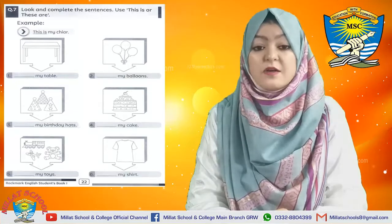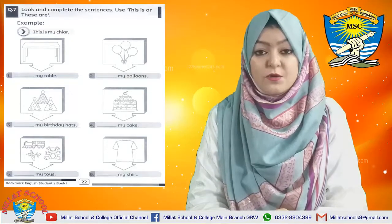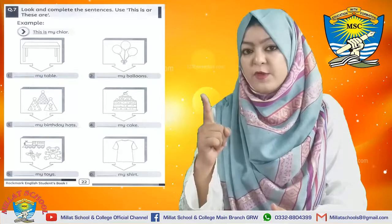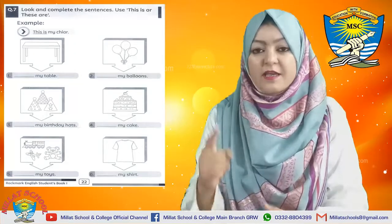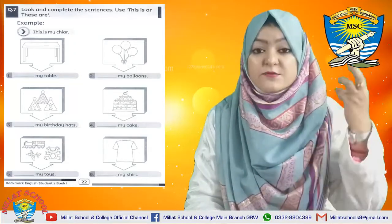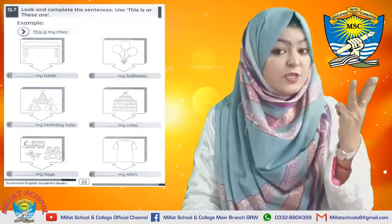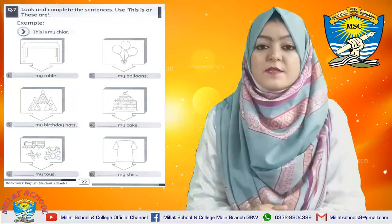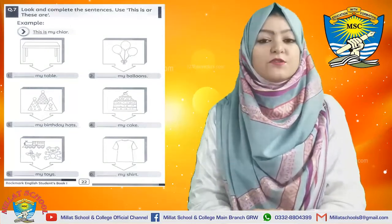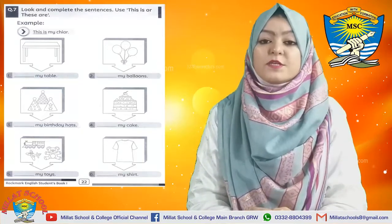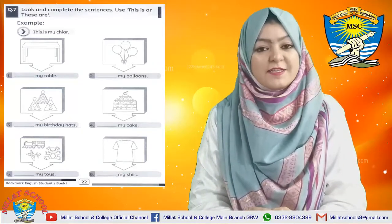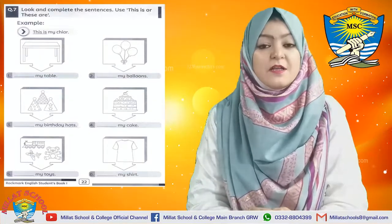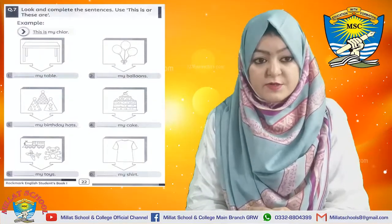We are going to use 'this' or 'these.' 'This' we use for a singular thing — this is the finger, singular. And 'these' we use for a plural thing — these are all fingers. So 'this' is for singular and 'these' is for plural. On page number 22 we are going to study this interesting topic.